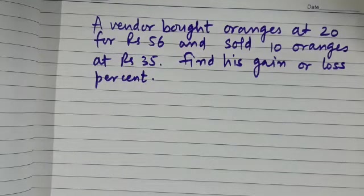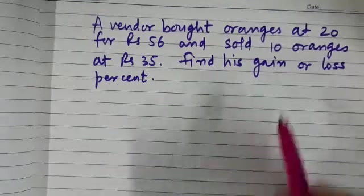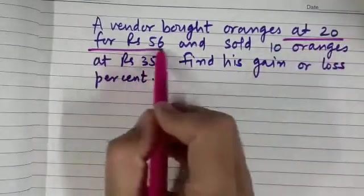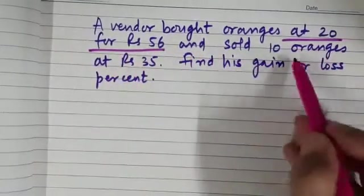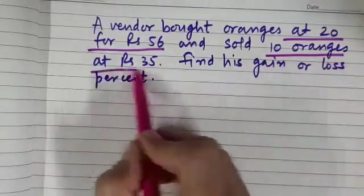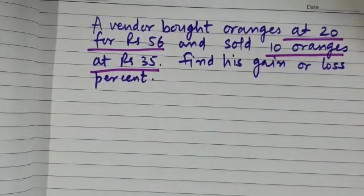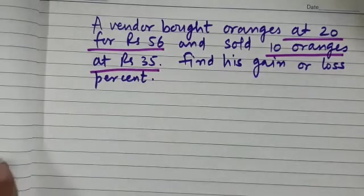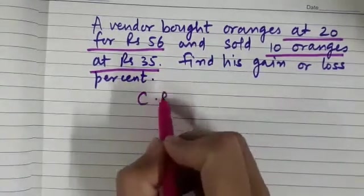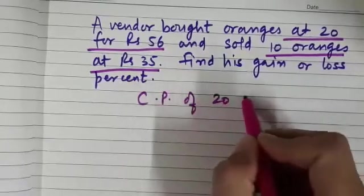A vendor bought oranges at 20 for rupees 56 and sold 10 oranges at rupees 35. In this question, we need to find his gain or loss percent. Now, what is the CP of 20 oranges?